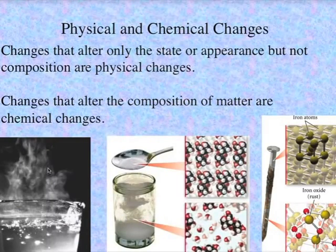We're going to talk now about physical and chemical changes. Changes that alter only the state or appearance, but not the composition, those are physical changes. When something boils, when a gas condenses, when you have something freeze from a liquid to a solid, or a solid melts into a liquid, you are not changing the composition of the substance, you are changing its state or appearance or its phase.